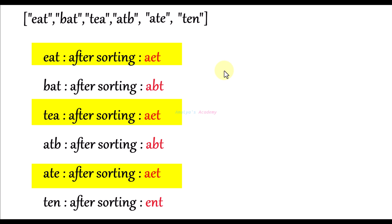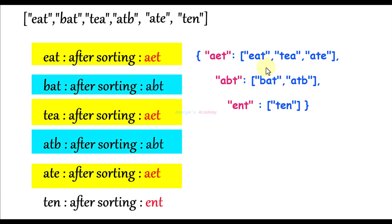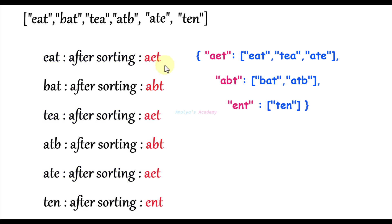If we use a dictionary to represent them, 'aet' is the key and the list of 'eat', 'tea', and 'ate' is the value. We will take a dictionary to store these grouped anagrams, where the key is the sorted form of the string and the value is the original strings. We just need to return the values of the dictionary to get the groups of anagrams.